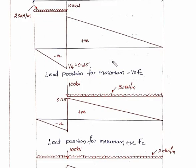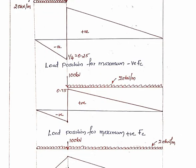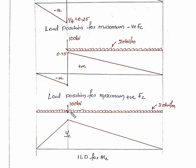Calculate moment at C: the uniformly distributed load acts throughout the span. For maximum moment at C, place the 100 kN concentrated load at point C.